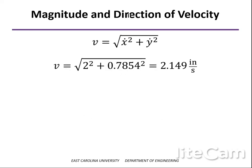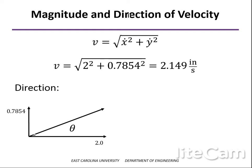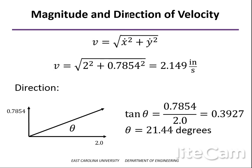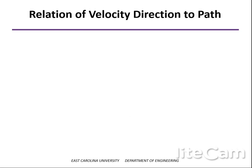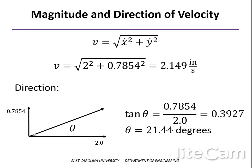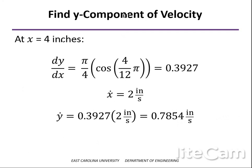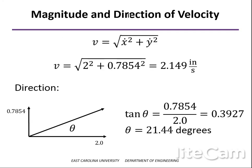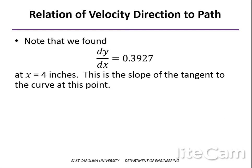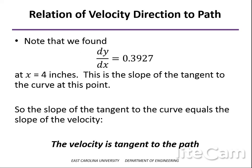Finding the magnitude, we square the two components, add them together, and take the square root. The speed of the particle at that point is 2.15 inches per second. The angle theta is the arctangent of the y over x components, or arctan(0.3927), corresponding to a little over 21 degrees. Notably, that tangent equals the derivative of y with respect to x, which is the slope of the tangent to the curve — confirming that the velocity vector is always tangent to the path.